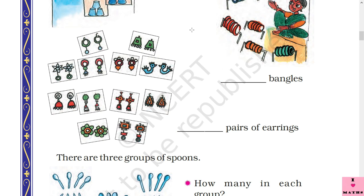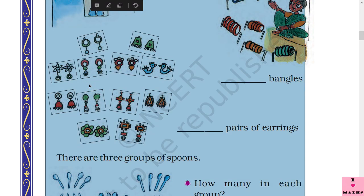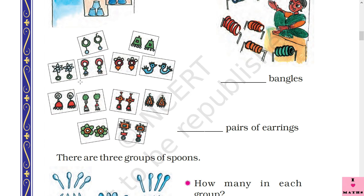These look like your mama's earrings! We need to find how many pairs of earrings there are. The earrings are not in perfectly arranged groups, but we can make groups of three. Three plus three is six, six plus three is nine, nine plus three is twelve. So there are twelve pairs of earrings.